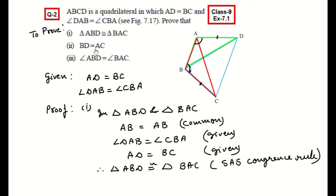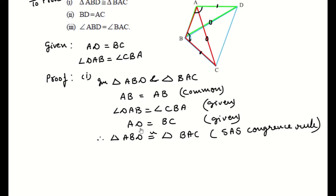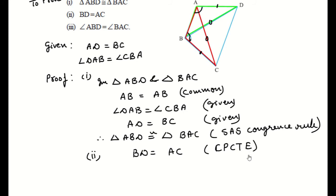Now in the second part, we have to prove BD is equal to AC. BD and AC are parts of these same congruent triangles ABD and BAC. So in second part, BD is equal to AC by CPCT — Corresponding Parts of Congruent Triangles are Equal.